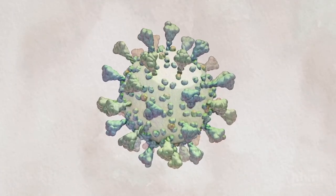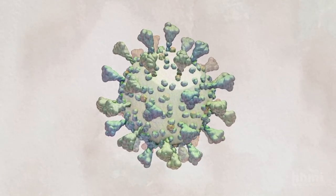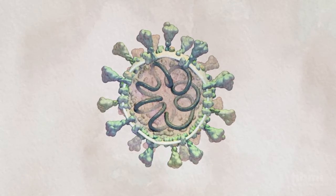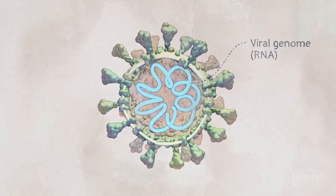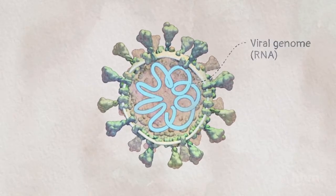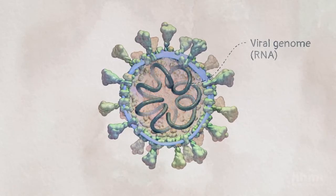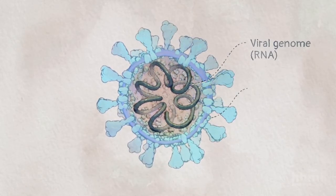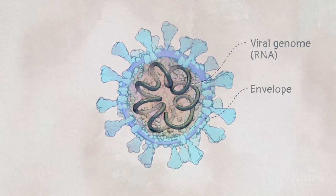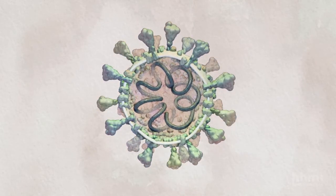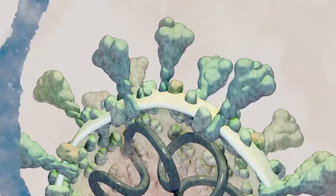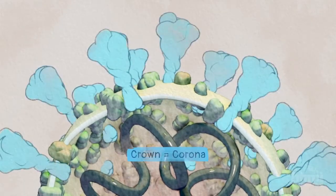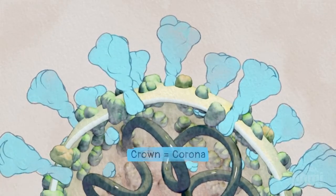All coronaviruses, including SARS-CoV-2, have a genome made of a single strand of RNA which is surrounded by a membrane made of lipids and proteins. This membrane is called an envelope. Coronaviruses are named after what looks like a crown of protein spikes that stick out of their envelope.